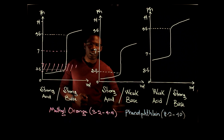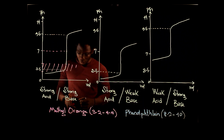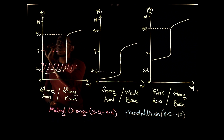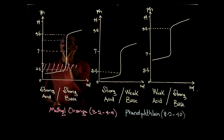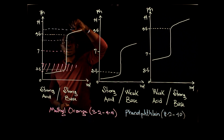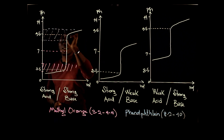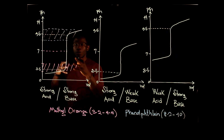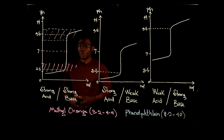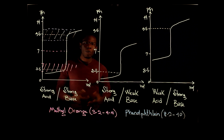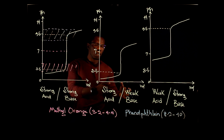What about phenolphthalein? Phenolphthalein is active within the range of 8.2, which is somewhere around here, and 10, which is somewhere around here. We can see that phenolphthalein will also work for this reaction. So when you have a strong acid and a strong base reacting with each other, there's a wide range of indicators that you can use.